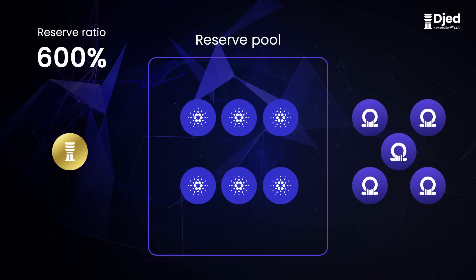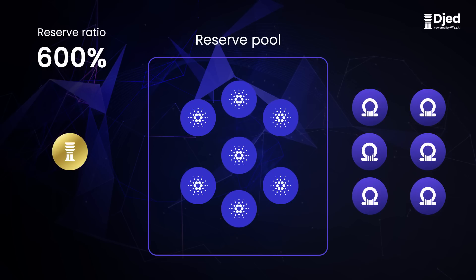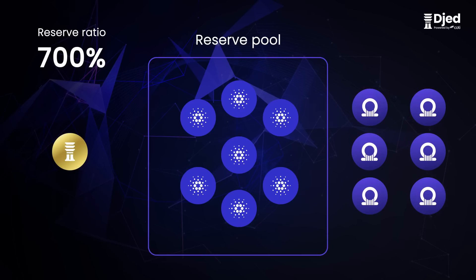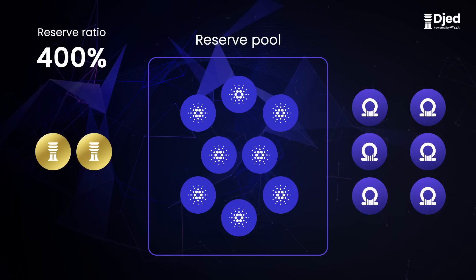Alex decides to mint 1 more SHAN by adding 1 more ADA to the pool. Now the ratio is 1 to 7, or 700%. This means that we can still mint and burn both JED and SHAN. David mints 1 more JED, which brings 1 more ADA to the reserve pool. This makes the ratio drop to 400%, because there are now 8 ADA in the pool and 2 JED minted, so the ratio is 2 to 8, which is equal to 400%.